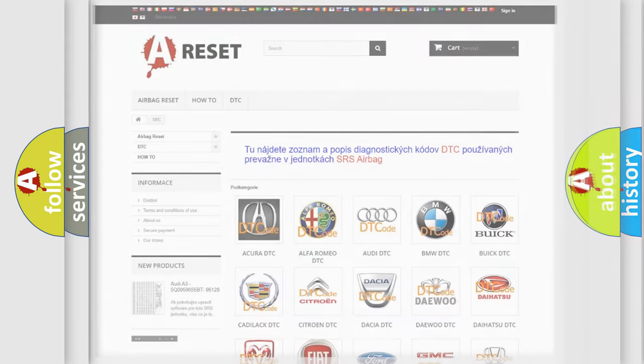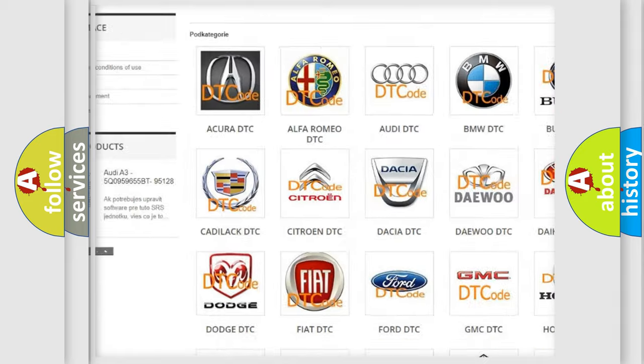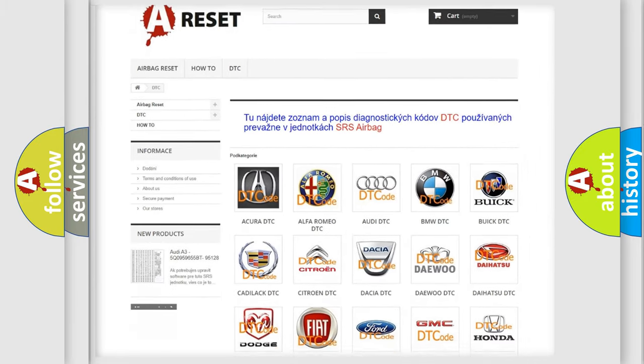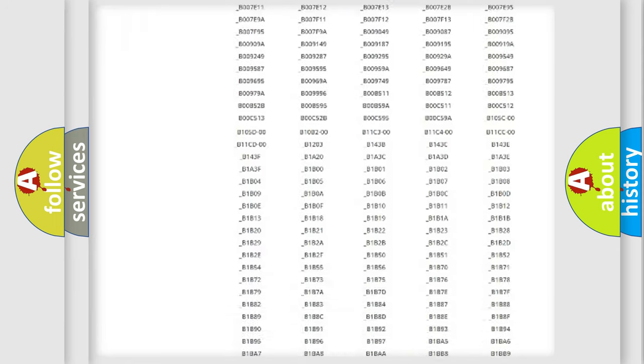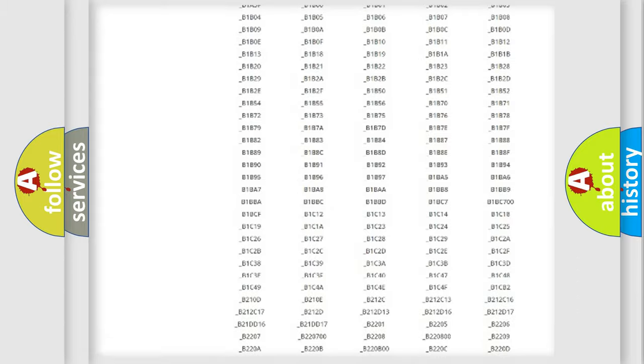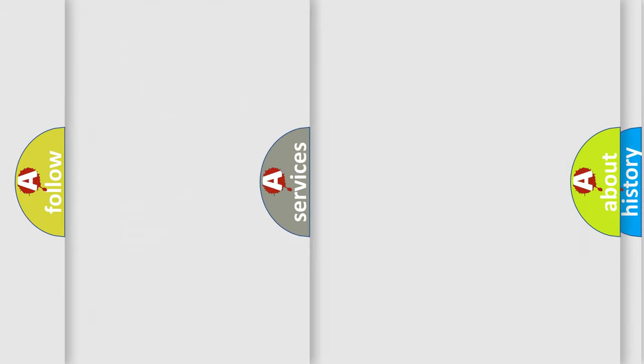Our website airbagreset.sk produces useful videos for you. You do not have to go through the OBD2 protocol anymore to know how to troubleshoot any car breakdown. You will find all the diagnostic codes that can be diagnosed in Dodge vehicles, and also many other useful things.